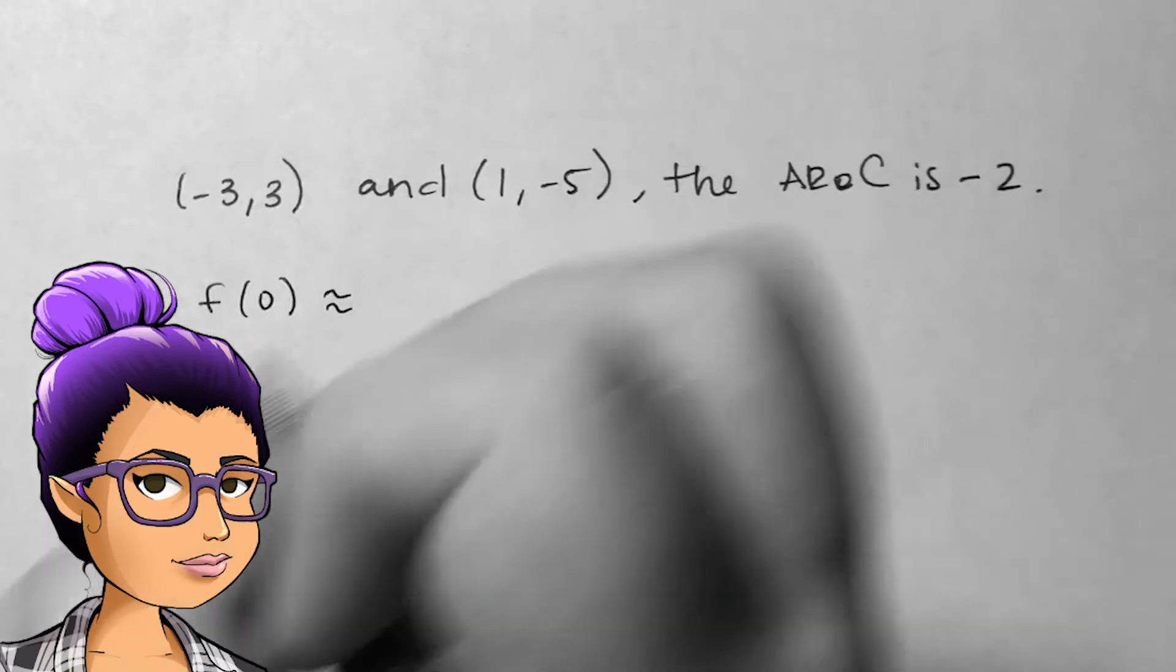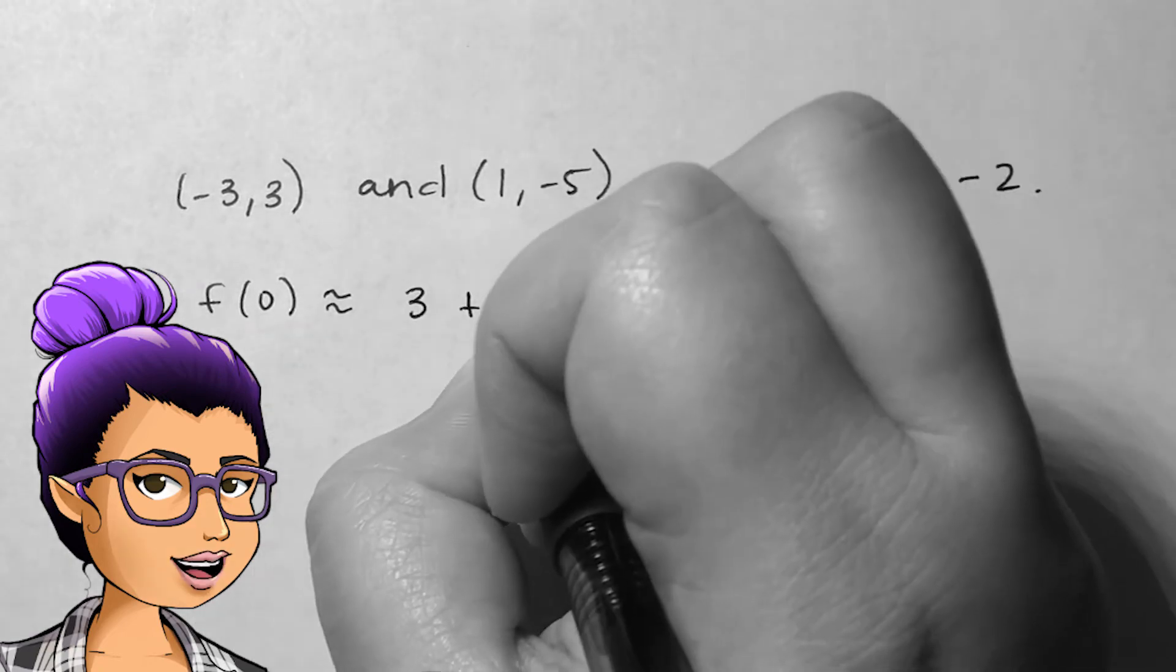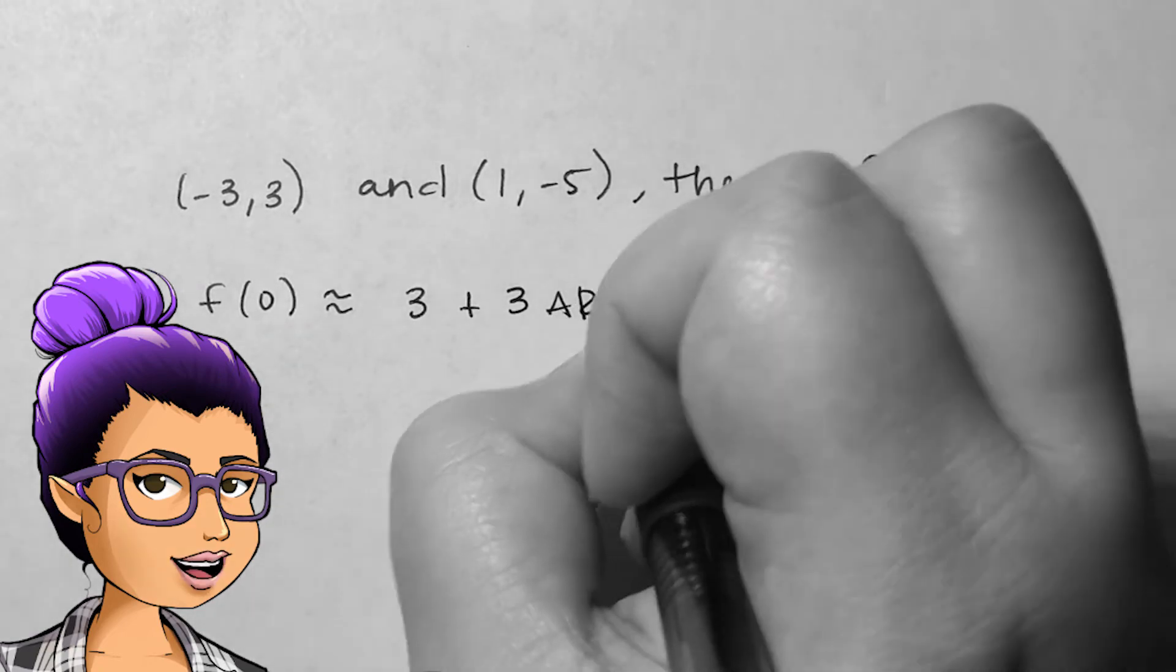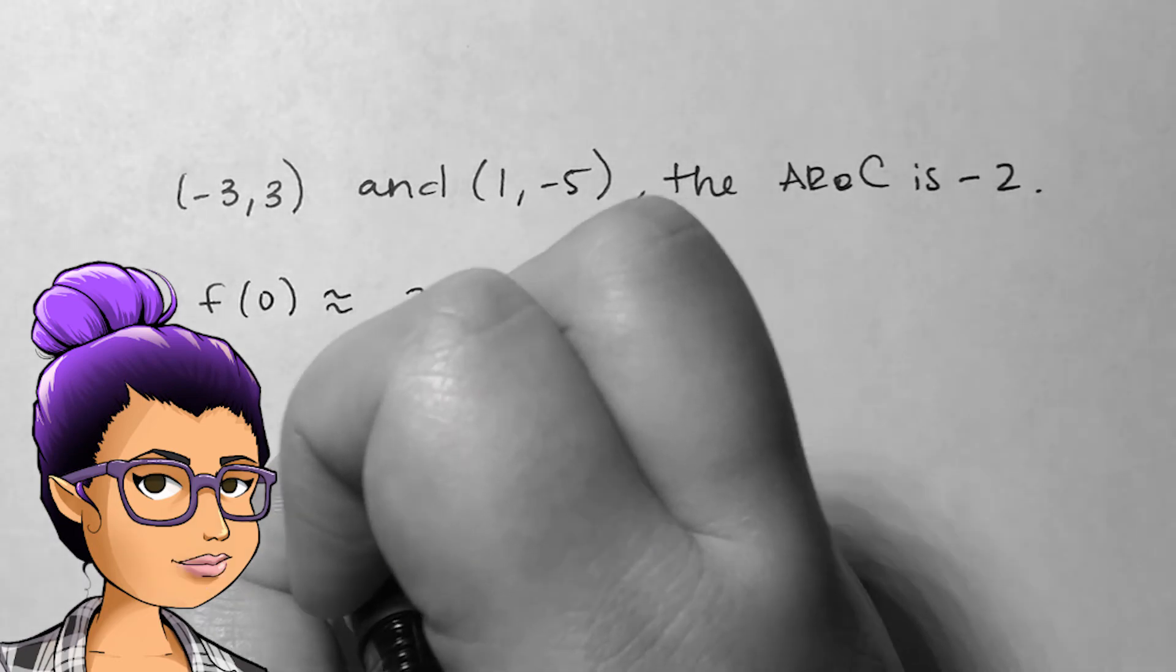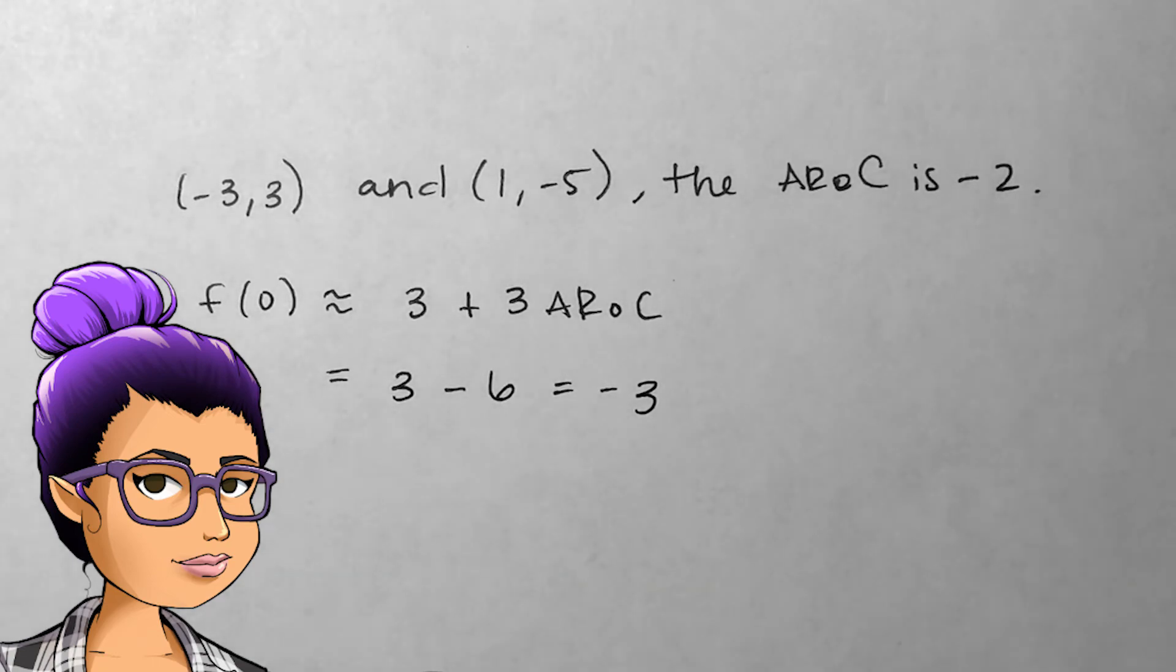Since 0 is 3 units away from the input negative 3, I could add 3 average rates of change, or negative 6, to the output at negative 3, or 3. My estimation for f(0) would then be negative 3.